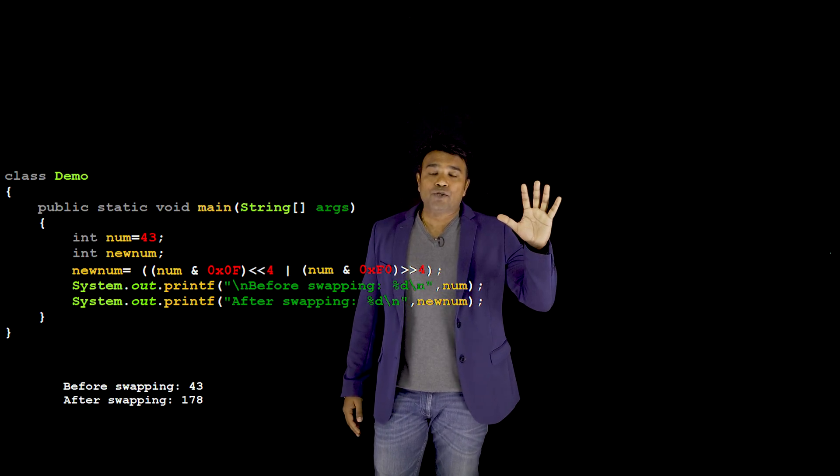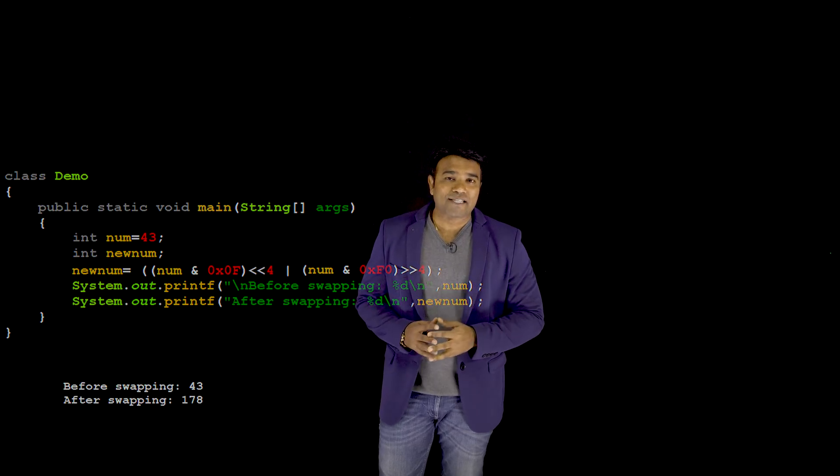This one statement packs all five steps. The new byte obtained is stored in a variable called new_num. I declare the two variables and initialize num to the data. The complete program looks like this, and when I execute it, this is the output. In my next video, you'll understand the five-step procedure to swap the even and odd bits present in a byte — watch my next video if you'd like to know that.